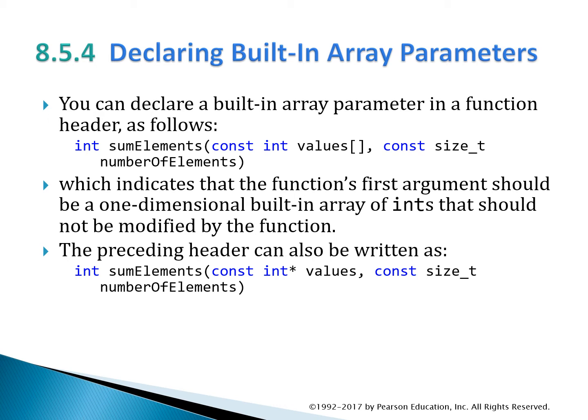Basically, what the array is doing is pointing to places in memory where information is held and associated with that array. All the array is doing is telling you where the beginning of that information is, and the rest is in the allocated memory slots. You could do this with pointers because pointers are also pointing to slots in memory. Instead of using square brackets, you could use the asterisk — the reference operator — and it would work just as well. You could say there's a constant integer pointer called values and similarly handle the size.